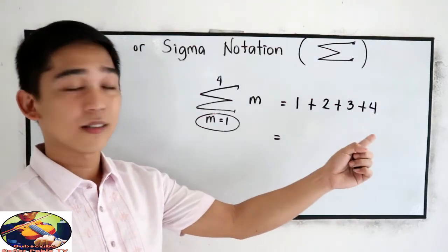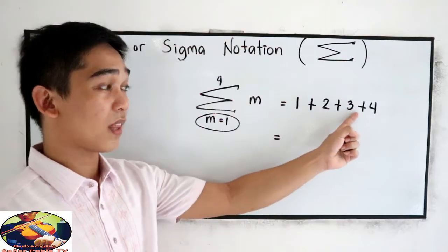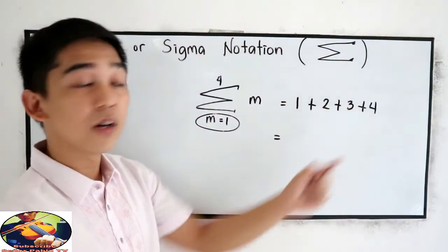So this will become 1 plus 2 plus 3 plus 4. And the sum is 1 plus 2, 3 plus 3, 6 plus 4, which is 10.